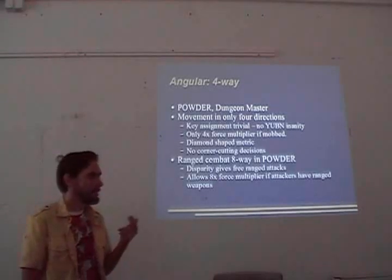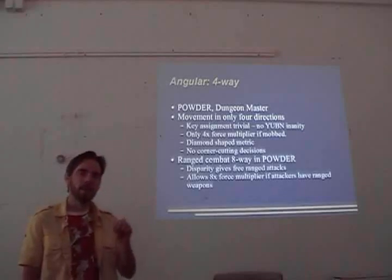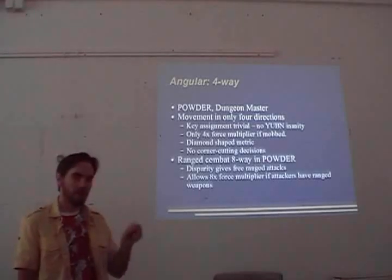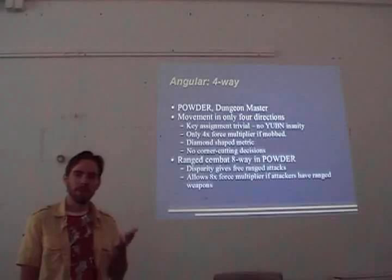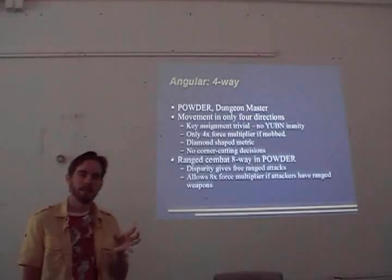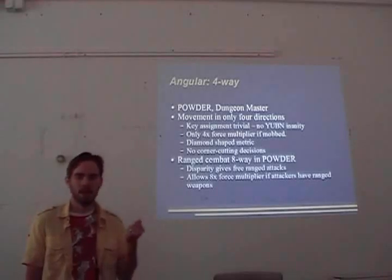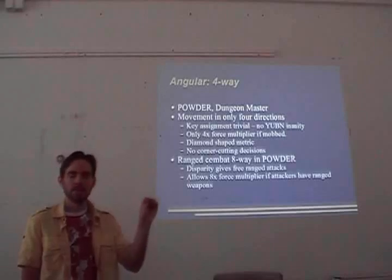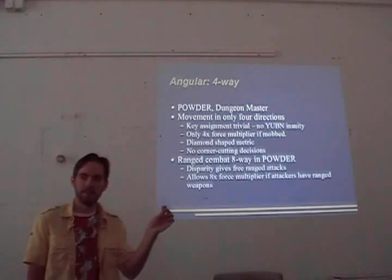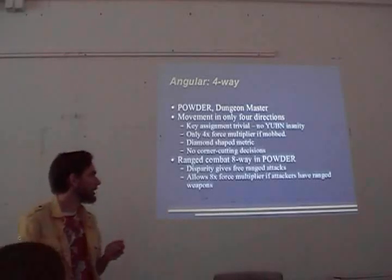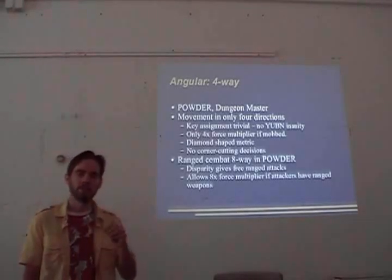Powder has an interesting exception where I kept eight-way range combat. So one unit of melee range only attacks four squares, yet one unit of ranged range attacks eight squares. This disparity basically allows ranged attacks to get one free attack compared to melee. A one-range spell like Chilling Touch is useful even with a powerful weapon — when an enemy is diagonally adjacent, you can cast the spell you can't use weapons for. This also means if your enemies have ranged attacks, you get an eight times force multiplier if surrounded.